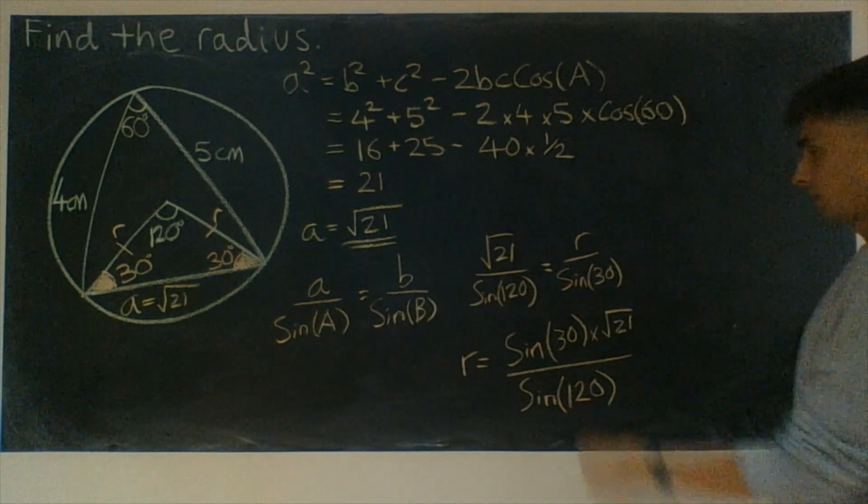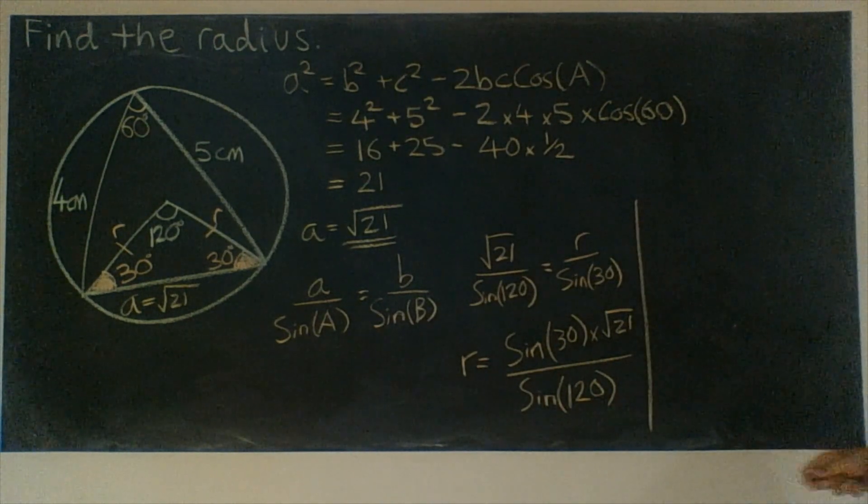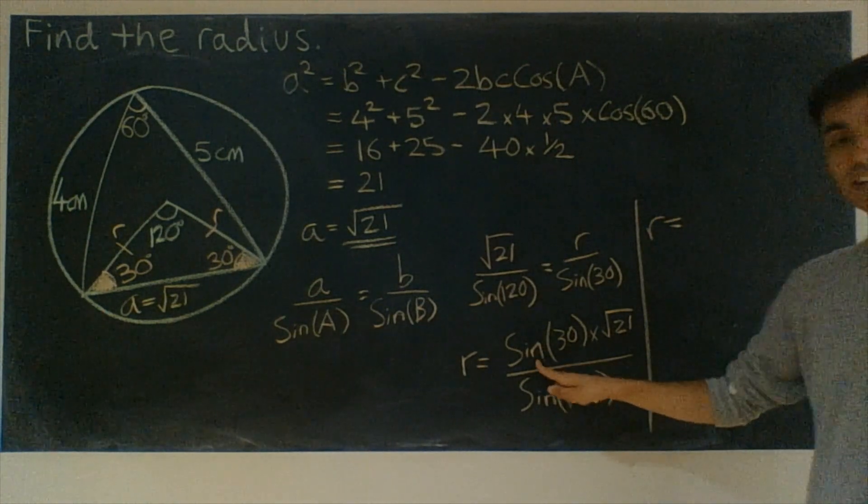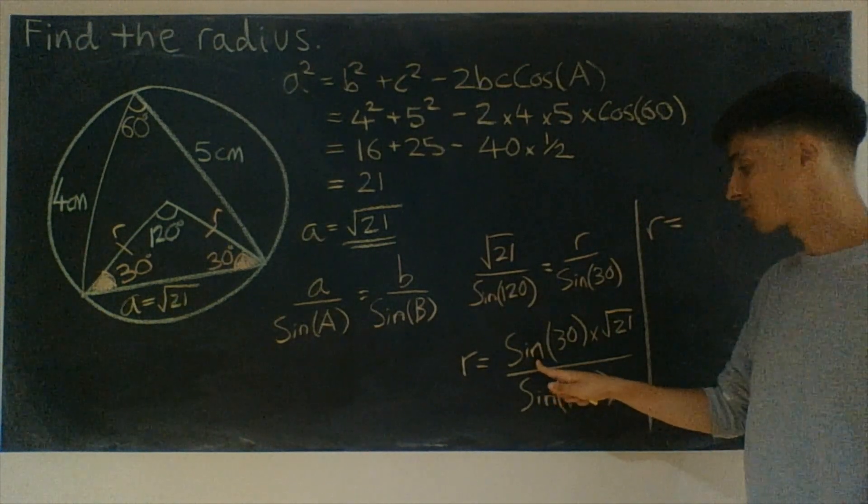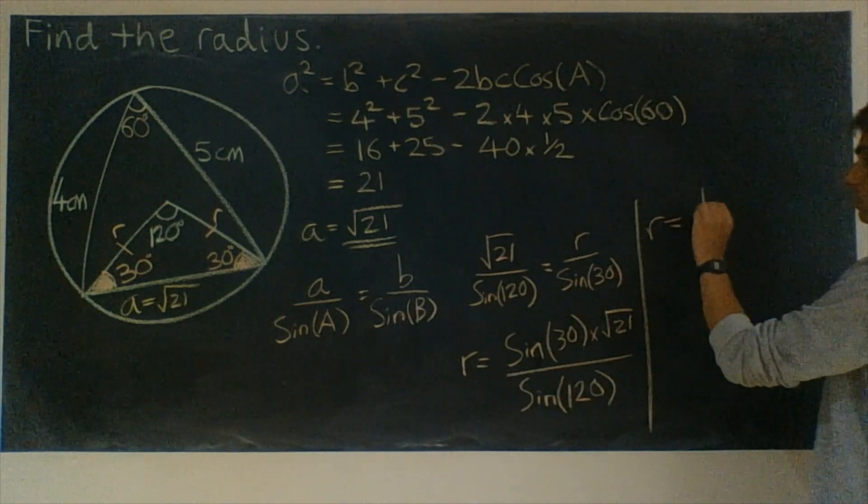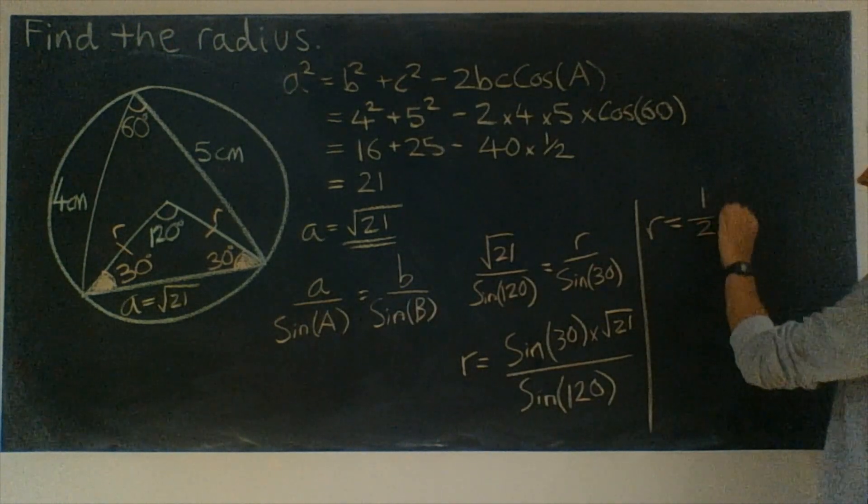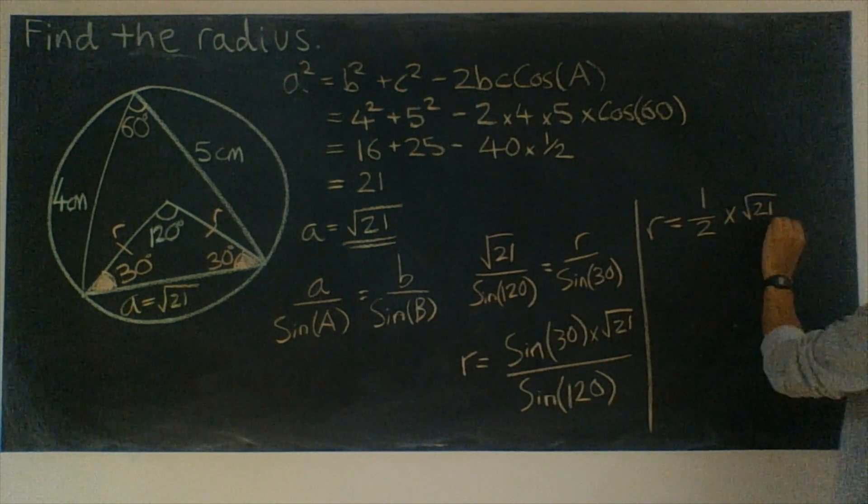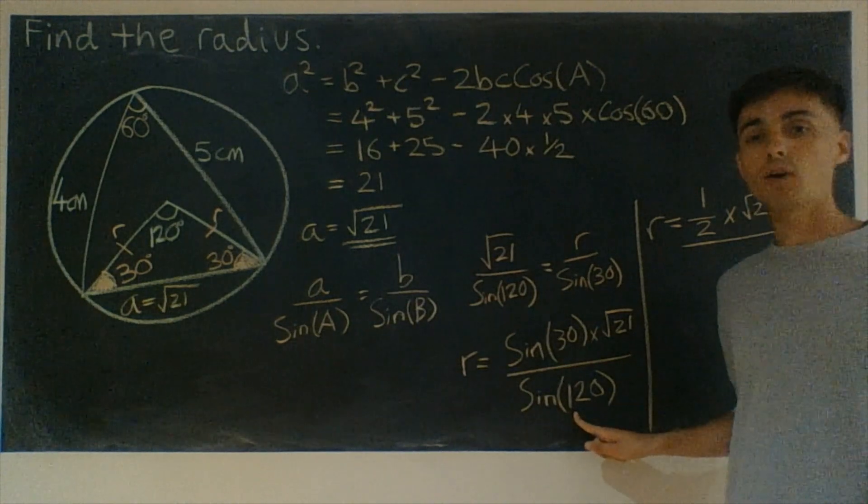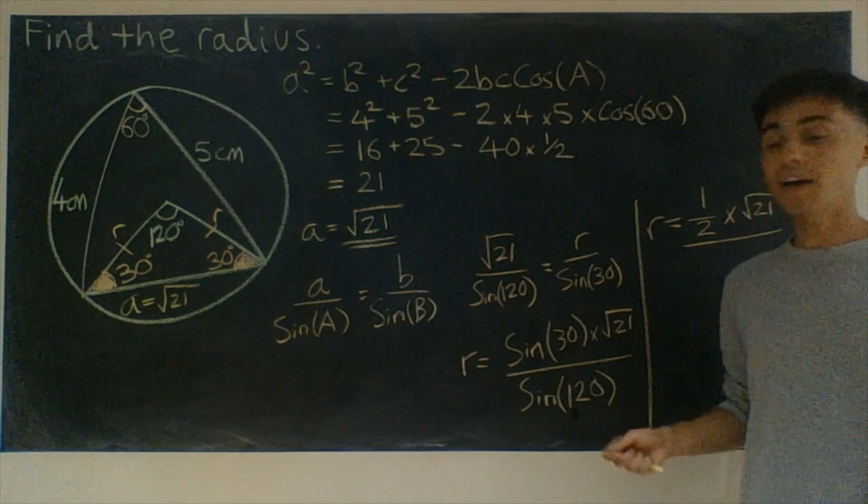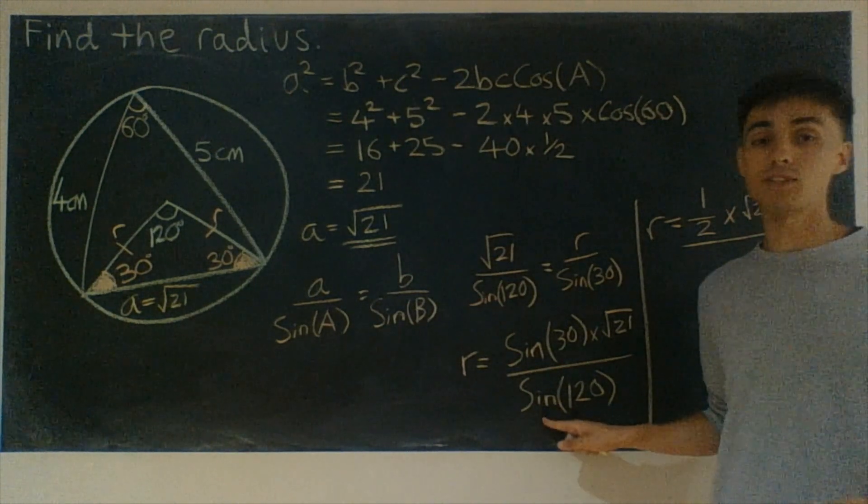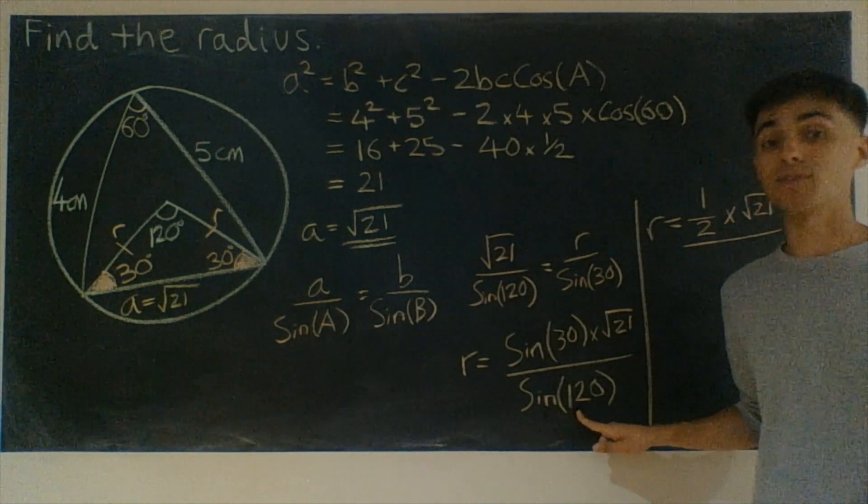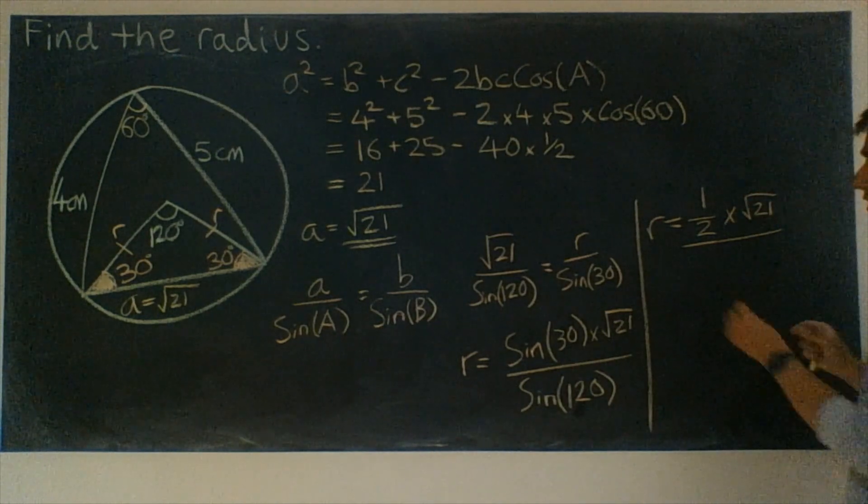So at this point, we're going to jump back over to here. So we've got R equals sine 30. Nice exact trig value. That's one half. So we've got one half times root 21, divided by sine 120. And sine is symmetrical about 90 degrees. So sine of 120 must be equal to sine of 60, which is root 3 over 2.